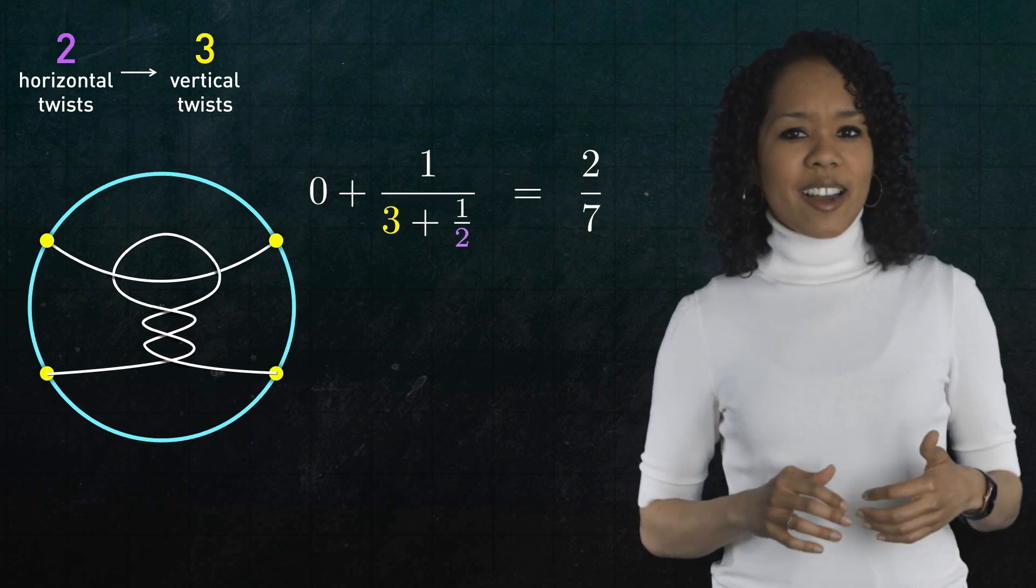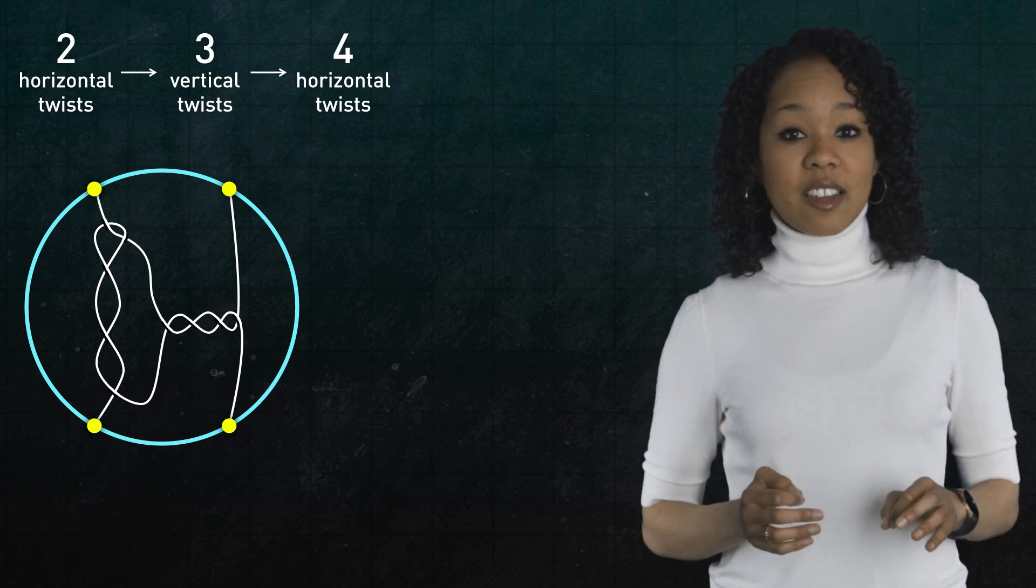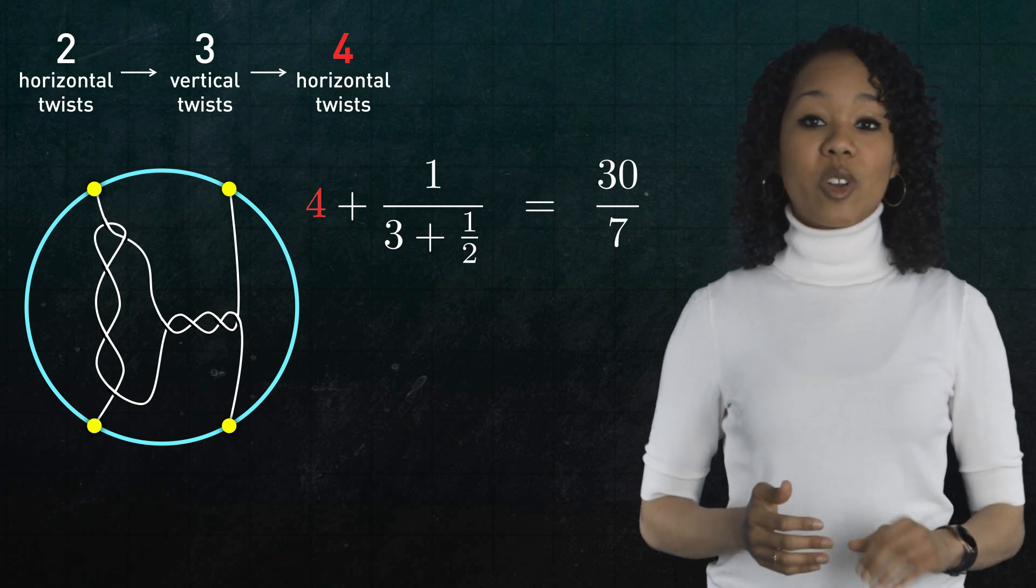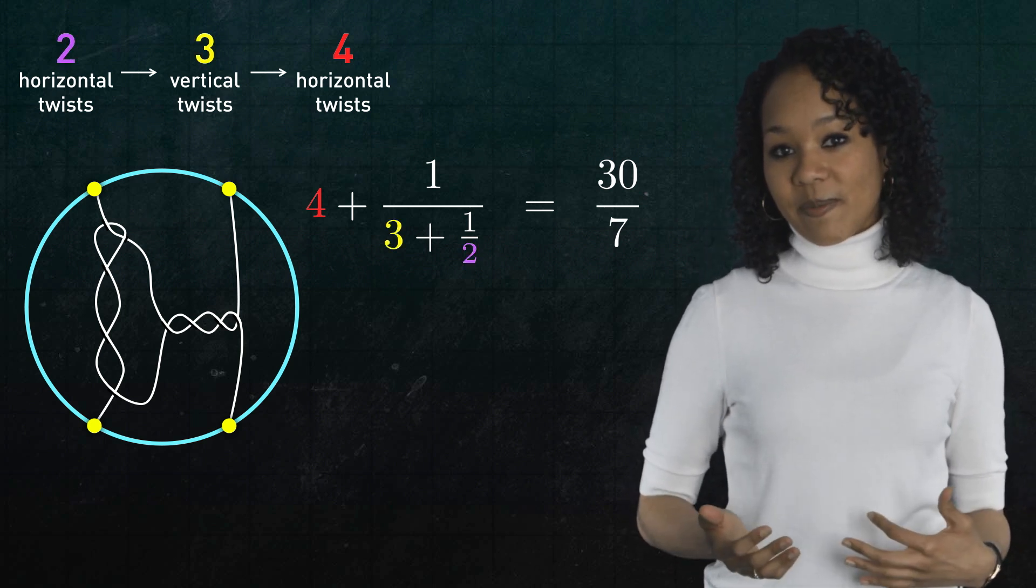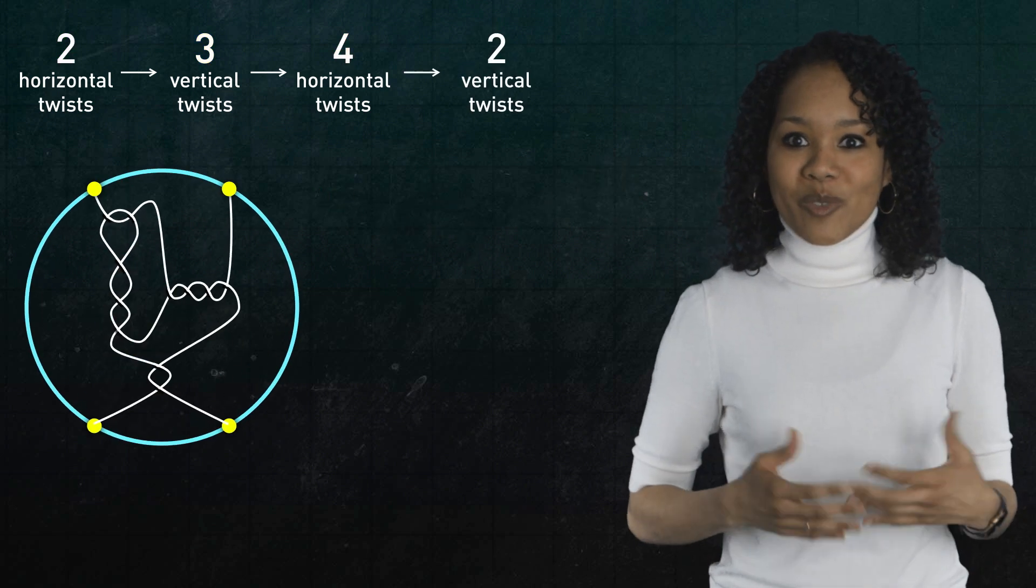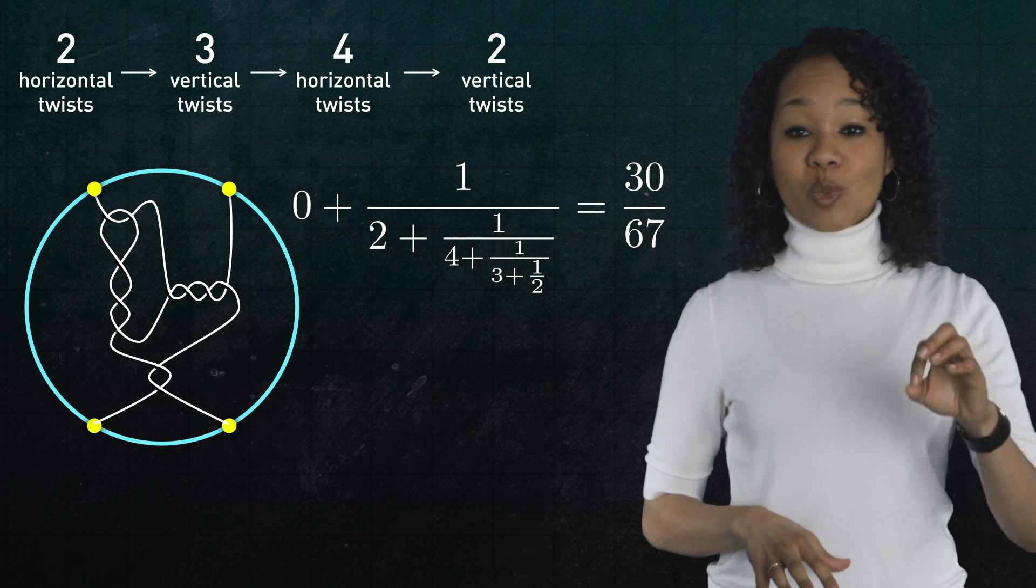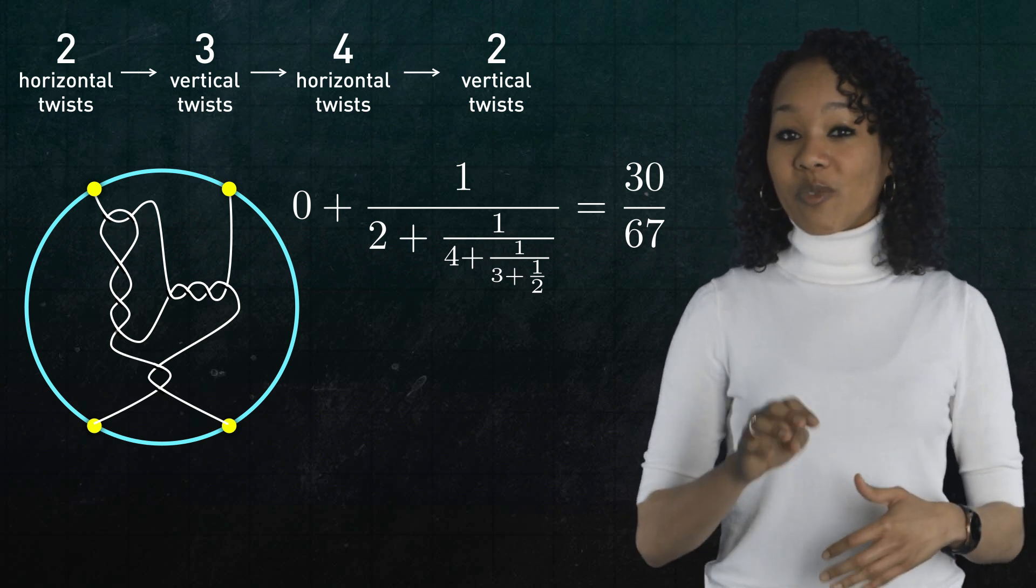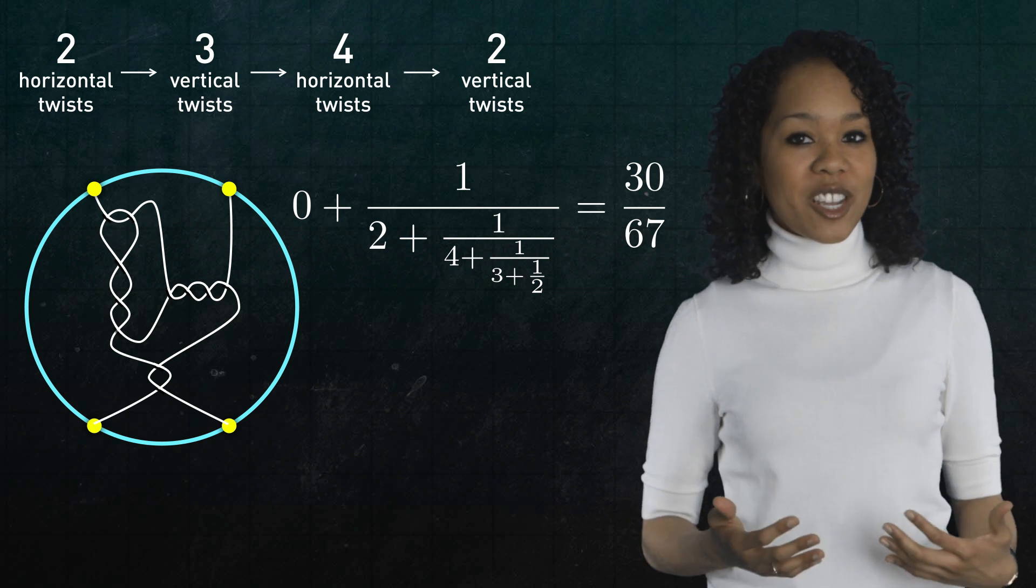But if we tack on four more horizontal twists, this time the fraction is, start with the last move, four plus one over three plus one over two, which is 30 over seven. Then we can add two more vertical twists, and so now the fraction is zero plus one over two plus one over four plus one over three plus one over two, which is 30 over 67. Okay, see the pattern?